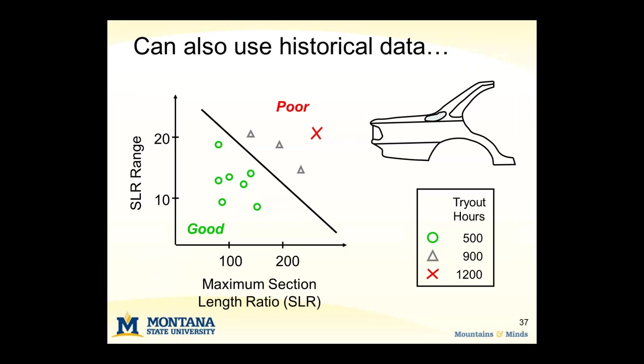You don't have to necessarily generate new data. Sometimes you can use historical data, as in this example where a company pulled data from historical designs and die trial data, mapping out a couple of different parameters. When they discovered that designs with good manufacturability were in one portion of the design space and those with poor manufacturability were in another, they could come up with a pretty easy way to test manufacturability — these are the design limits of the manufacturing system, and as long as you stay on one side of the curve, you can guarantee a manufacturable product.